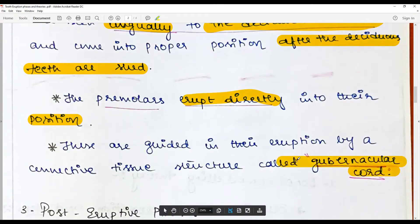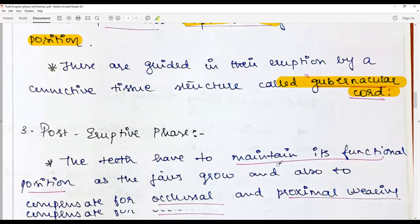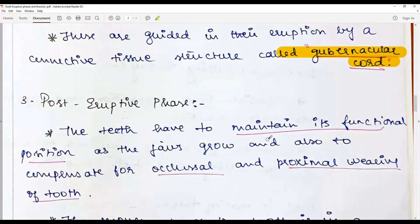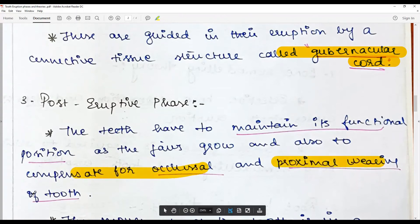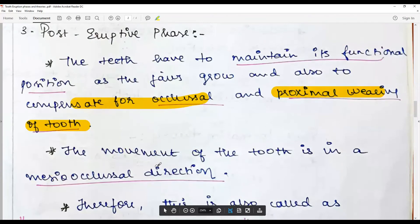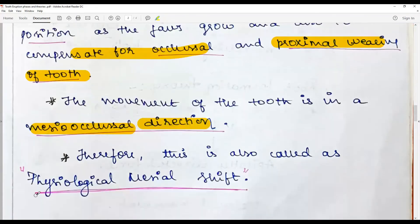The post-eruptive phase: the teeth have to maintain their functional position as the jaw grows, modifies, and bone remodeling is a constant factor, and also to compensate for occlusal and proximal wearing of the formed tooth. The movement of the tooth to accommodate this is called the post-eruptive phase and it is usually mesio-occlusal in direction.